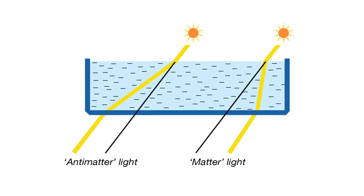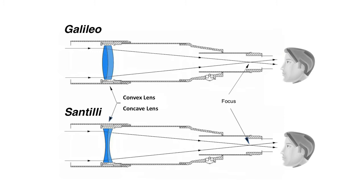As you can see in the diagram, we have two telescopes: the Santilli and the Galileo. If you look closely, you'll see that the only real difference between the two is the lens. Notice that the Galileo uses a convex lens, whereas the Santilli Telescope uses a concave lens.